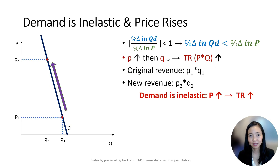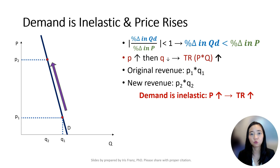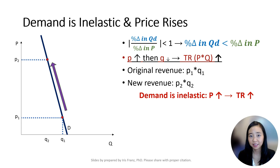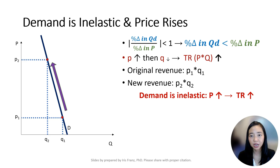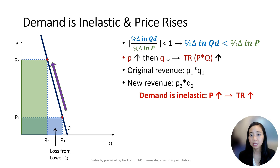Let's move on to inelastic demand. If the demand is inelastic, that means the change in quantity demanded is not responsive to a change in price. If the price goes up, quantity demanded drops by only a tiny little bit. So we draw an arrow pointing up beside the price to indicate the rising price, then a tiny arrow pointing down beside the quantity. Total revenue will be dominated by the larger upward pointing arrow, so total revenue will rise. When the price goes up from P1 to P2, total revenue goes up from P1Q1, the blue rectangle, to P2Q2, the green rectangle. The company loses a little revenue from lower quantity demanded, but gains way more revenue from the higher price. Therefore, total revenue goes up.